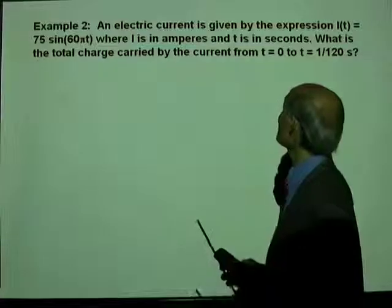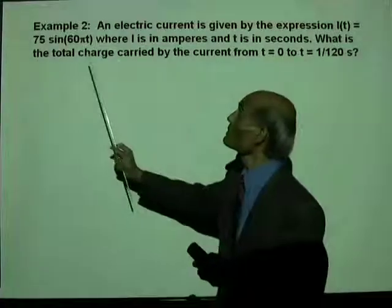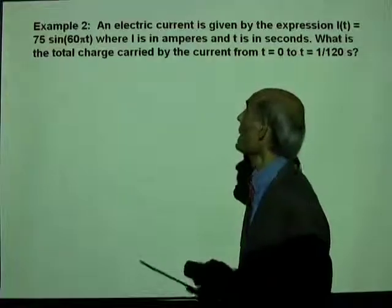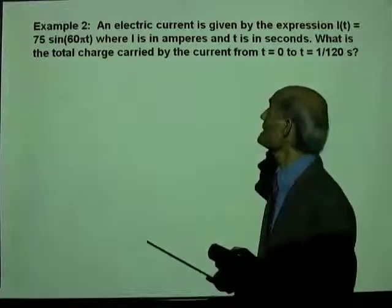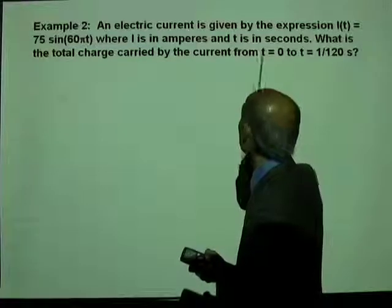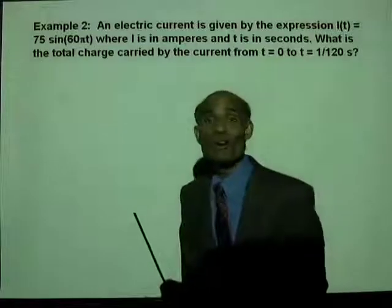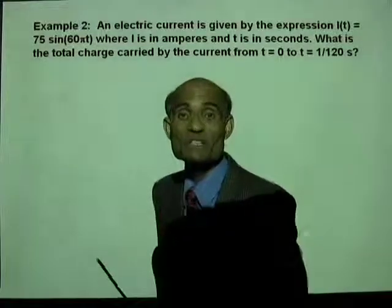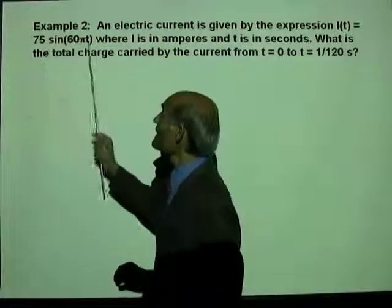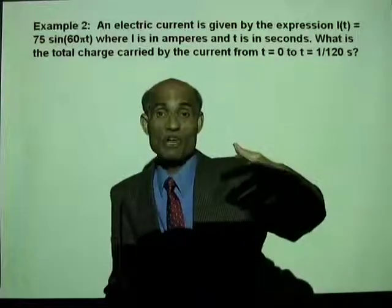An electric current is given by the expression I of T equal to 75 sine 60 pi T, where I is in amperes and T is in seconds. What is the total charge carried by the current from T equal to zero to T equal to one over one hundred twentieth of a second? Well, this is the type of current we actually get at home and in the office.